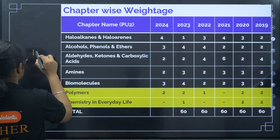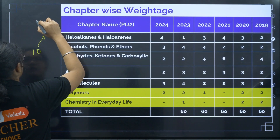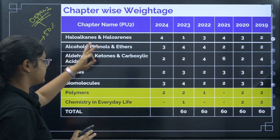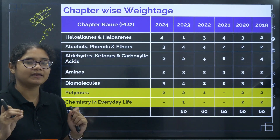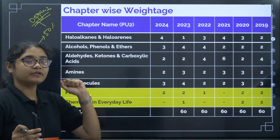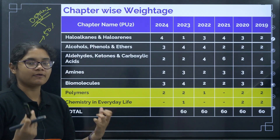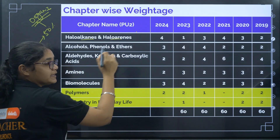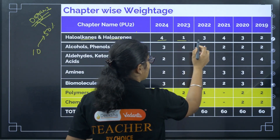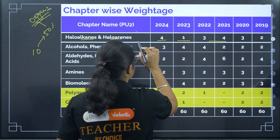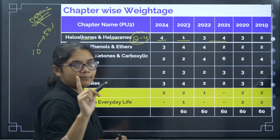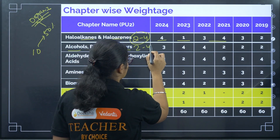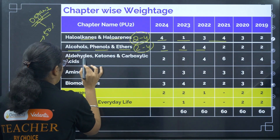In PU2, 50% of the chapters are organic chemistry, so a lot of questions will be asked from organic chemistry. It is very important that you give more time and more effort to organic chemistry from PU2. Haloalkanes and Haloarenes — from the last six years, you can expect easily two to four questions. Alcohols, Phenols and Ethers — again two to four questions. Very, very important topics.